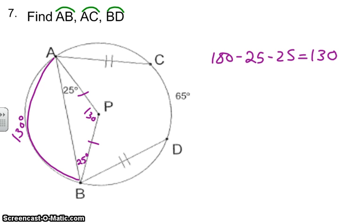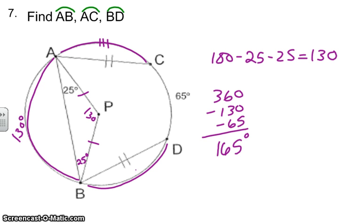And then the circle is going to be 360 degrees, minus the 130 that we just found, minus the 65, leaves me with 165 degrees left over. Now, 165 has to be divided equally because we know if congruent chords, then congruent arcs. So these two are exactly the same, which just means we have to divide 165 divided by 2 to get 82.5.